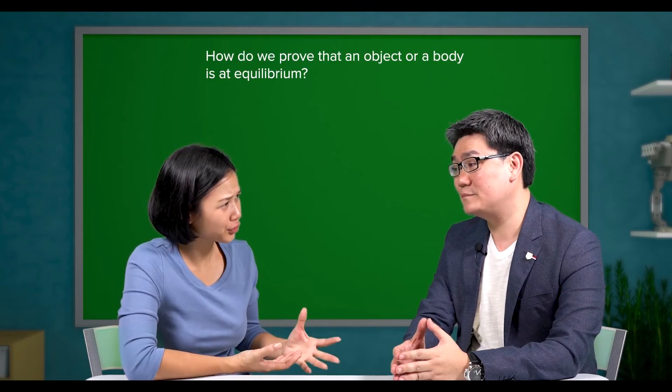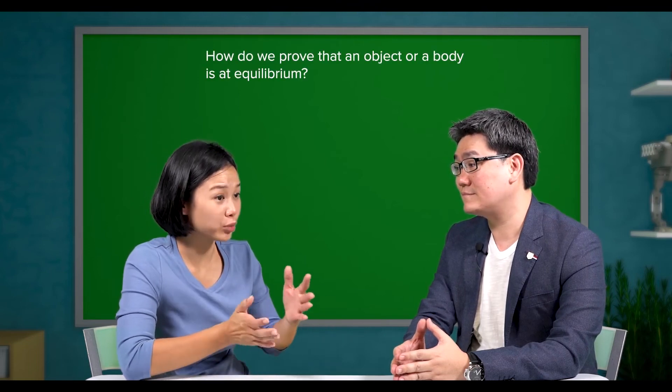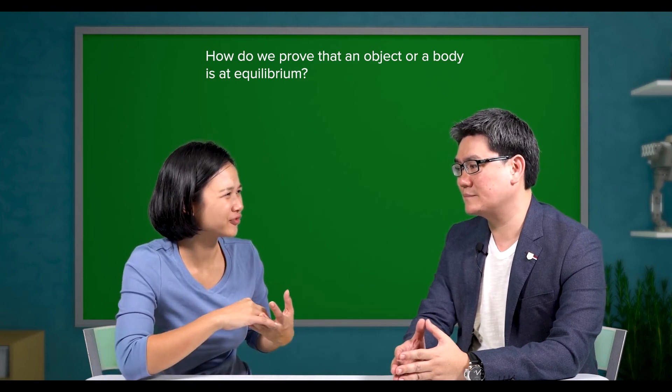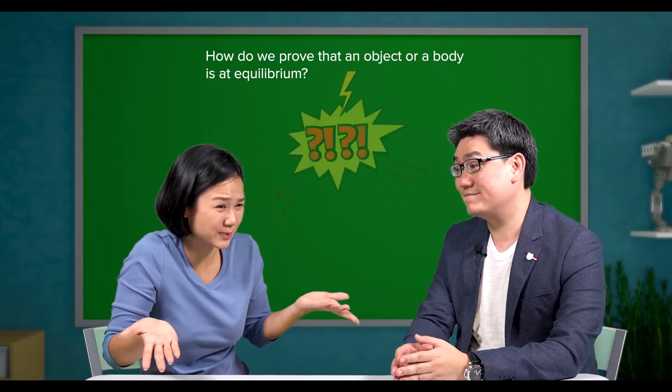I see. I understand it now. But, teacher, how do we prove that an object or a body is at equilibrium? Shouldn't there be some sort of, you know, experiment?